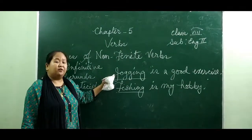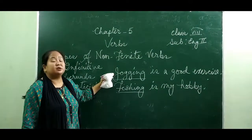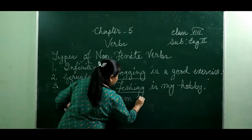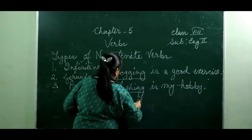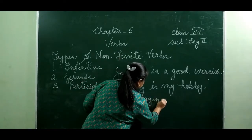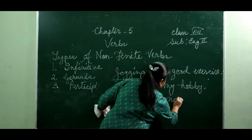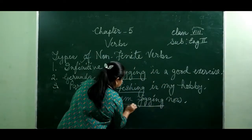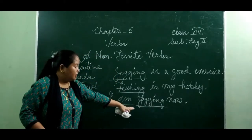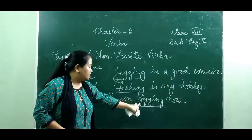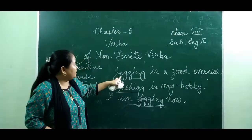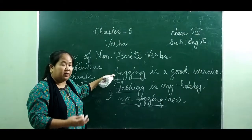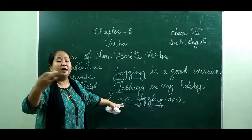This 'ing' form of verb can also be used as a verb. For example: 'I am jogging now.' Here the 'ing' form of verb is used as a verb, not as a noun. So the 'ing' form of verb can be used as a noun — that is a gerund — and it can also be used as a verb.